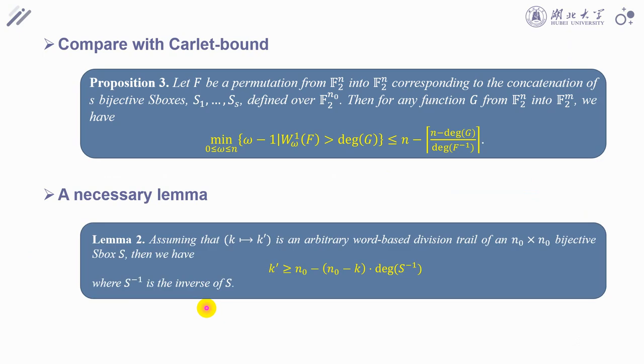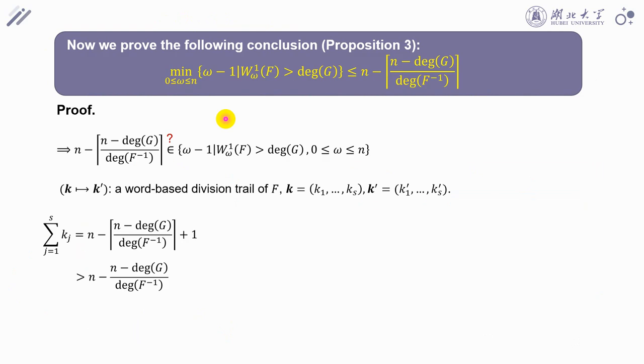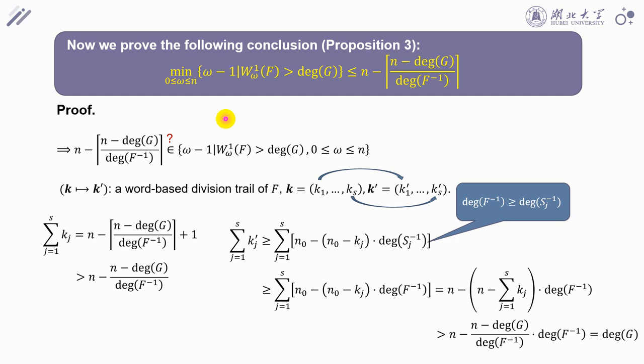Similarly, we can obtain the same conclusion when comparing the Carlit bound. Here we omit the proof of this conclusion because the detail of this proof is similar to the proof of proposition 2.